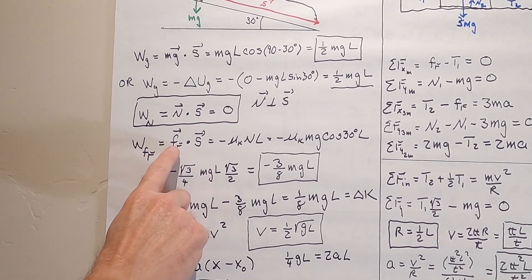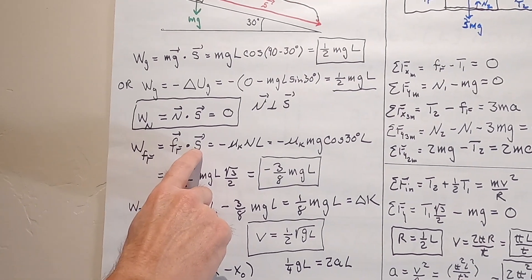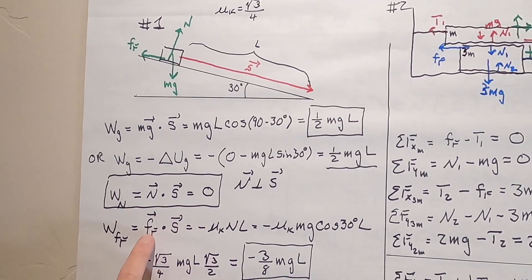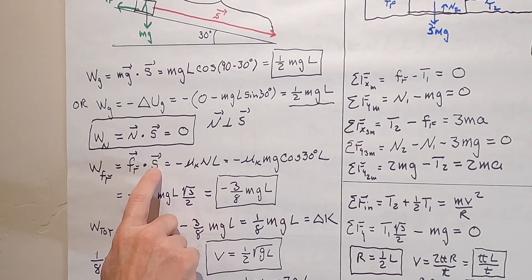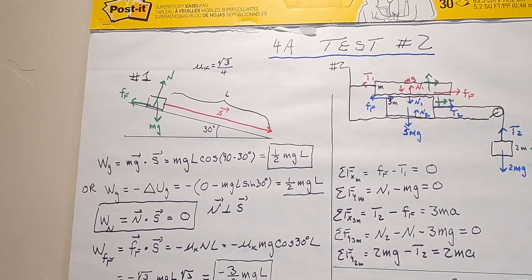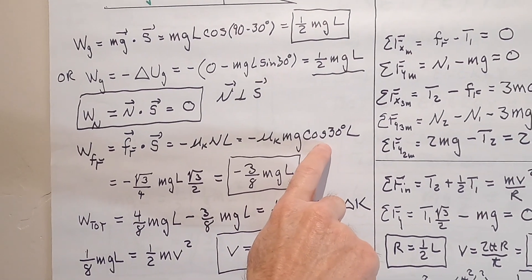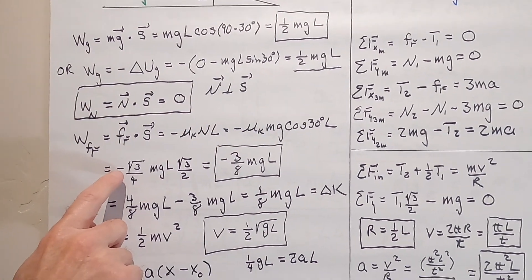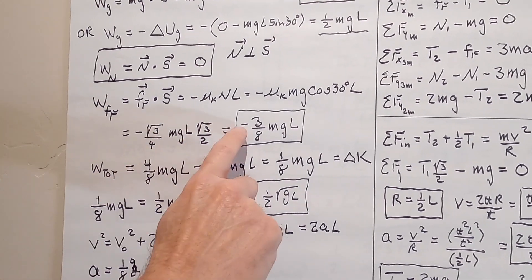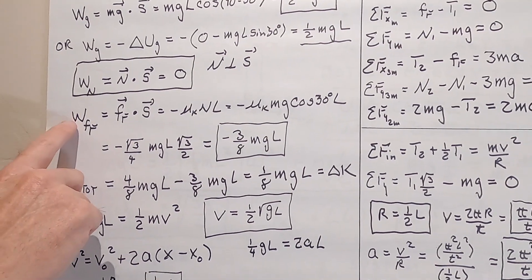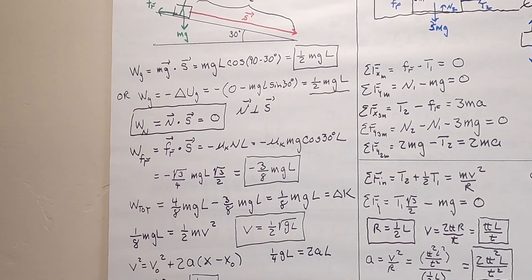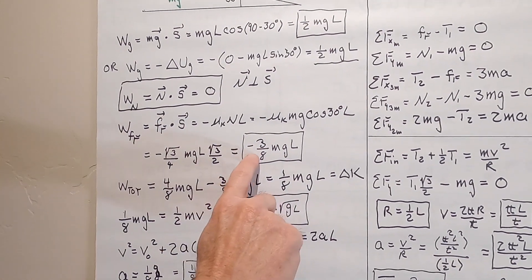Work due to friction is the frictional force dotted with the distance. The angle between this and s is 180, which gives us the minus. The friction is mu_k times n. The magnitude of s is just l. And then n equals mg cosine of 30 degrees. So I can plug in mu_k, which is the square root of 3 over 4, and cosine of 30, which is the square root of 3 over 2. This gives me minus 3/8 mgl. Any time a force speeds it up, like gravity here, it was positive work. Friction only slowed it down, so this was negative.